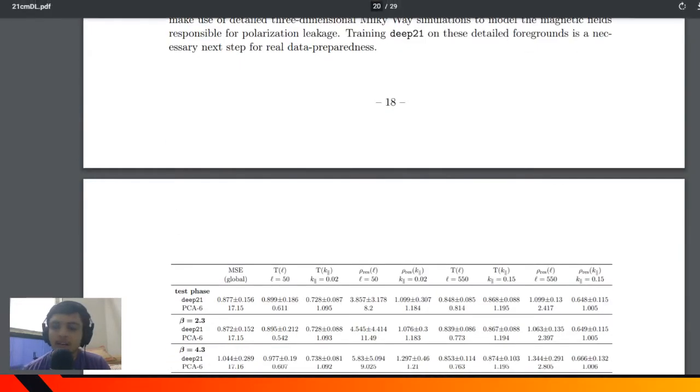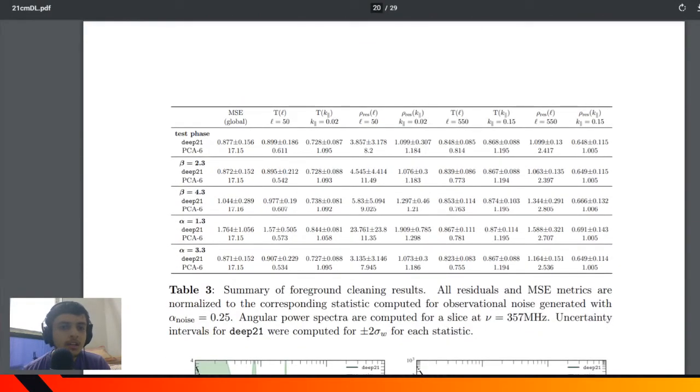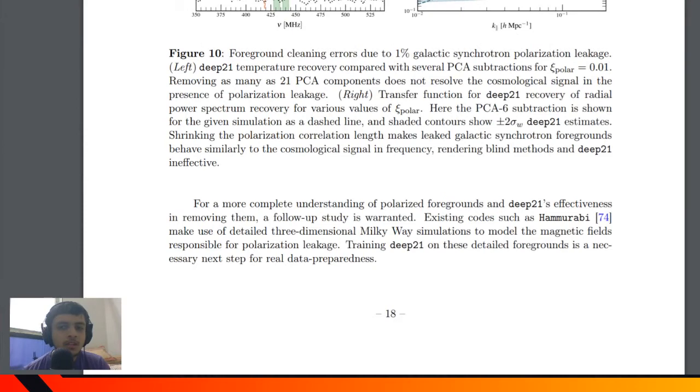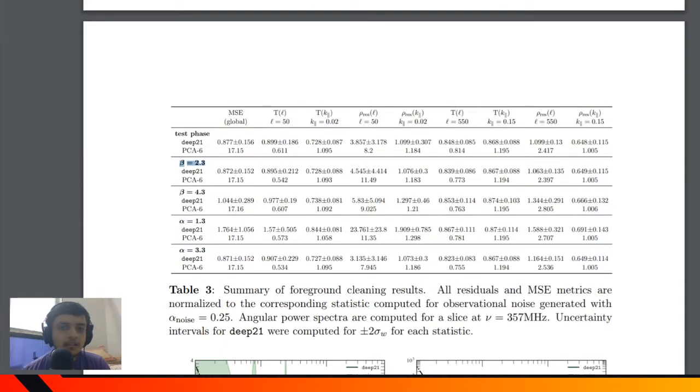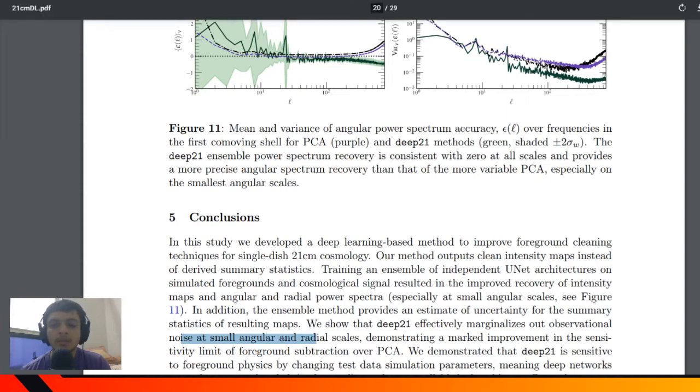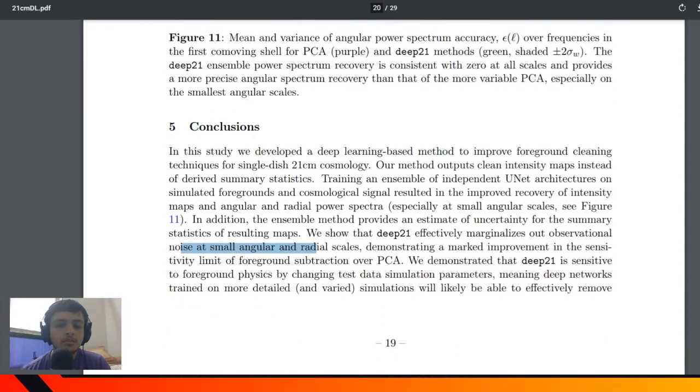This is the main comparison table that they have shown. They have used PCA with 6 components and chosen various beta parameters, which is some kind of cosmological number, and kept alpha as 0.25. From this simulated data they got various benchmarks and concluded that when you have such big architectures like U-Net, it helps marginalize out observational noise at small angular and radial scales and demonstrates improvement over PCA.